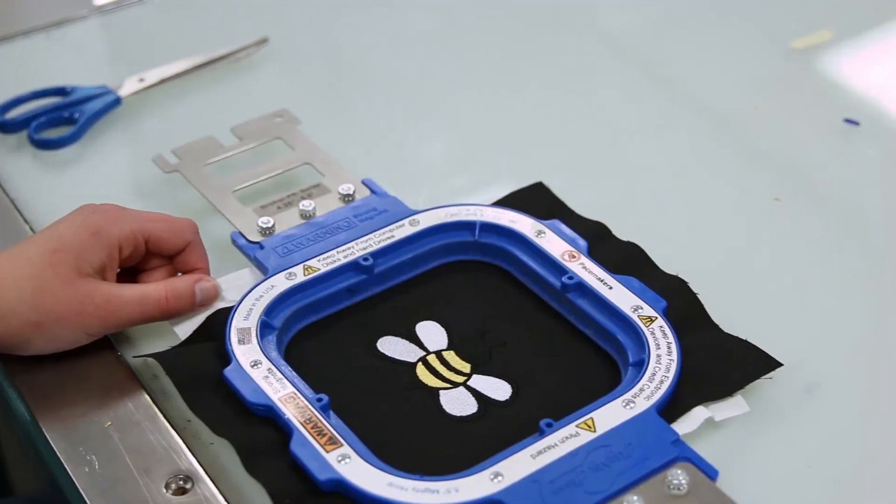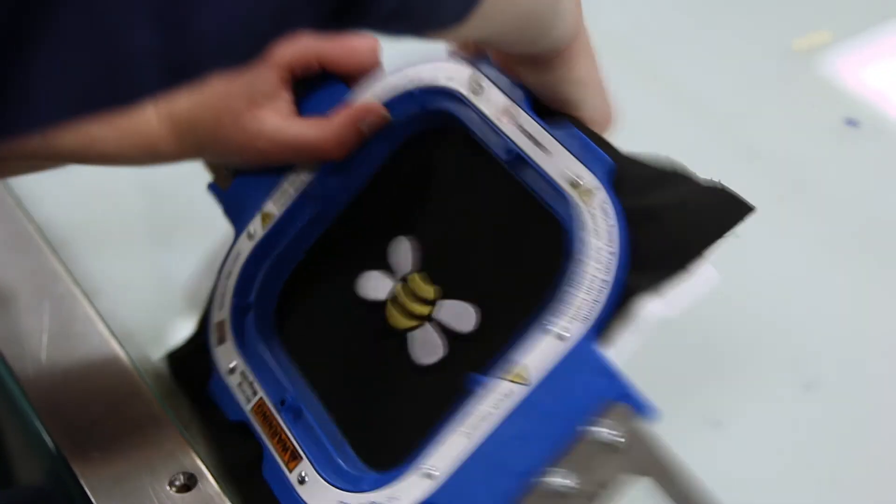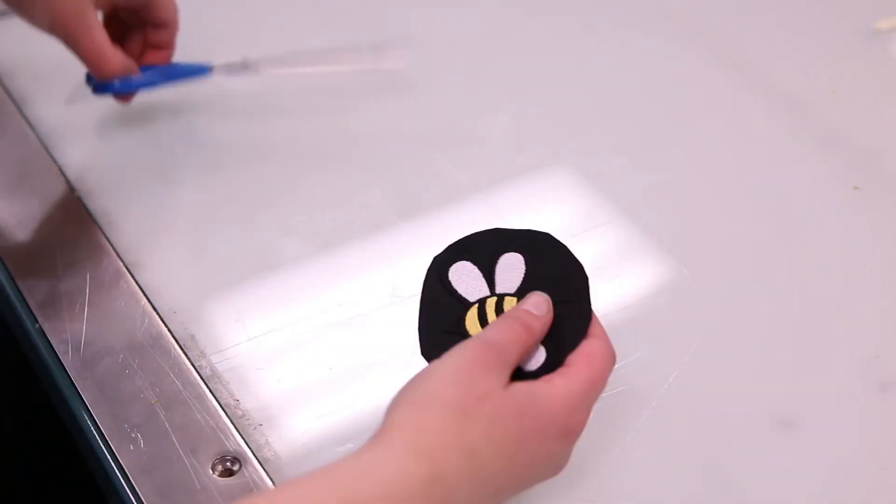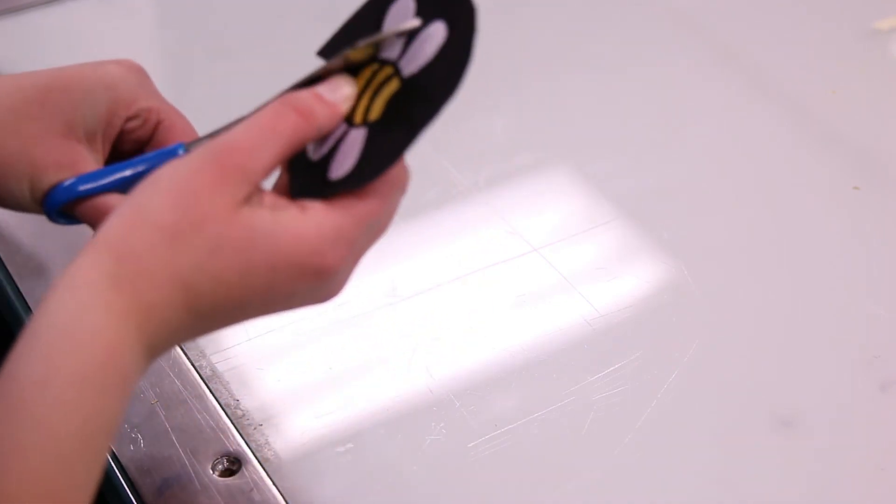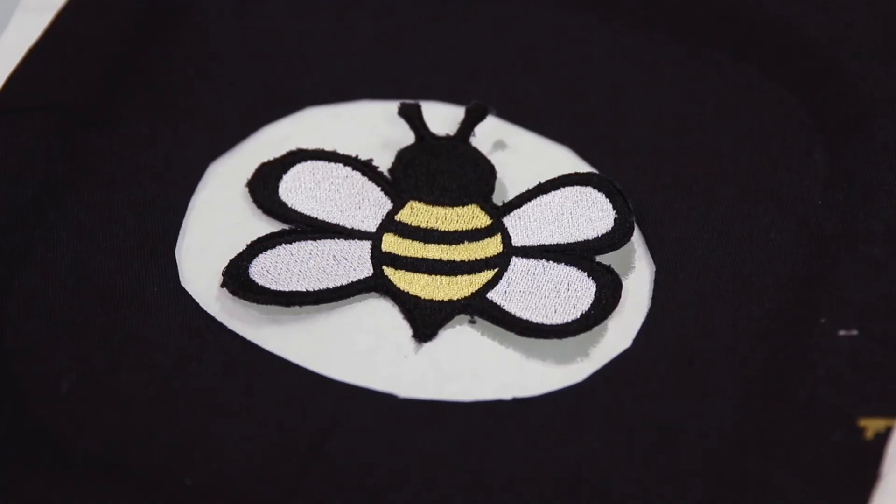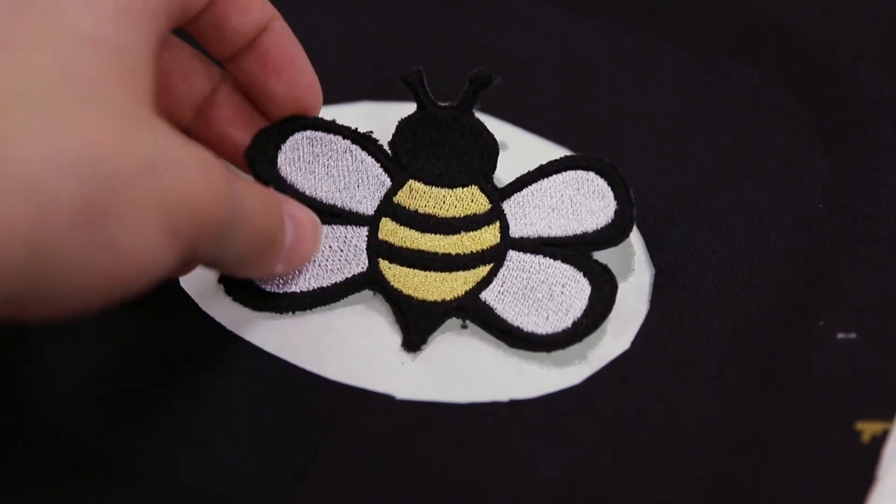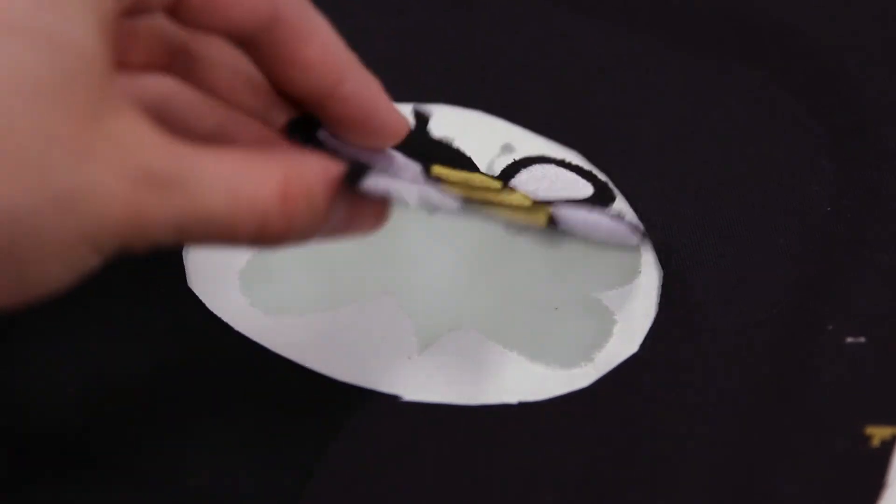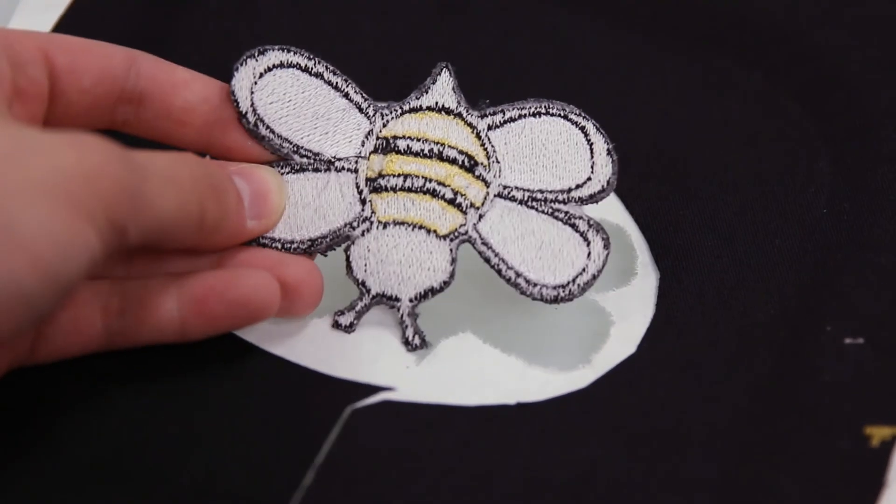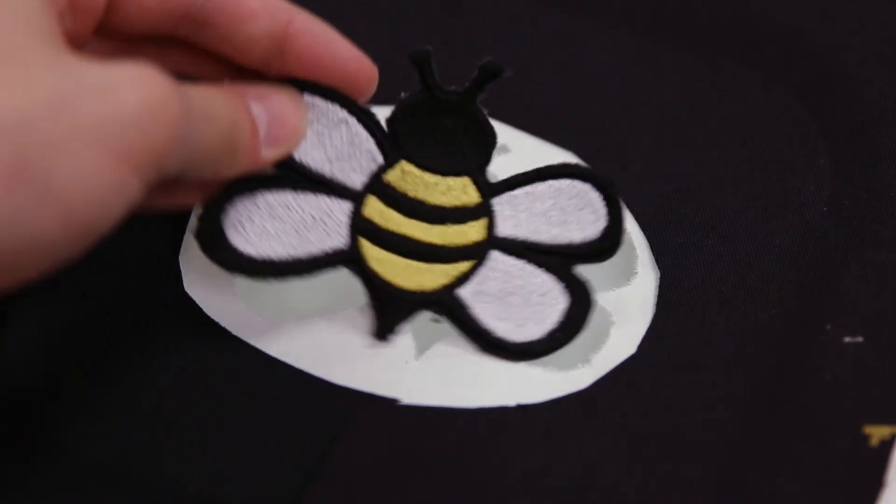Once the design is complete sewing, unhoop it and begin cutting excess fabric away. After that, you may want to add an additional backing that is an iron-on or sew it to the desired clothing, and that finishes how to make a patch.